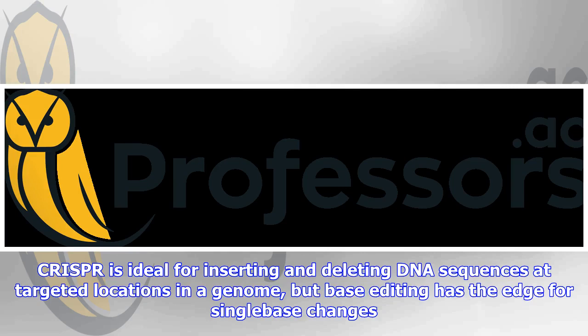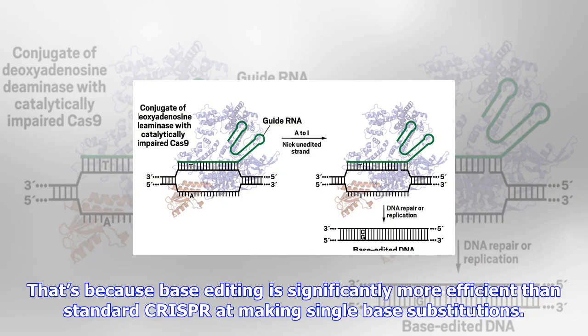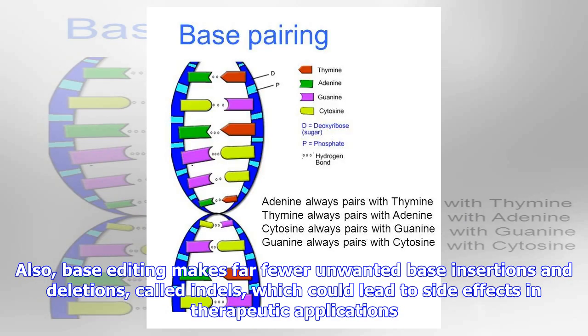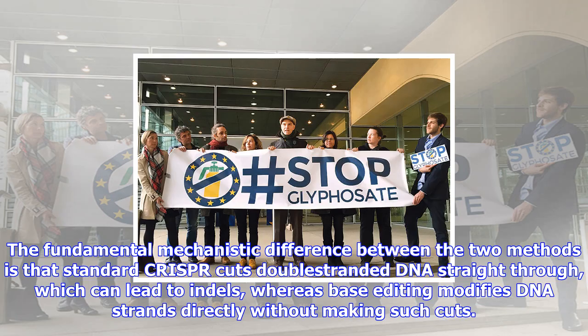Also, base editing makes far fewer unwanted base insertions and deletions, called indels, which could lead to side effects in therapeutic applications. The fundamental mechanistic difference is that standard CRISPR cuts double-stranded DNA straight through, which can lead to indels, whereas base editing modifies DNA strands directly without making such cuts.